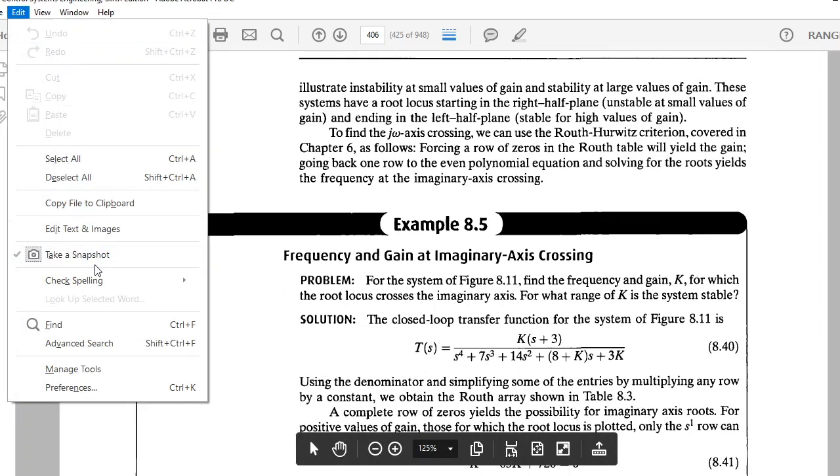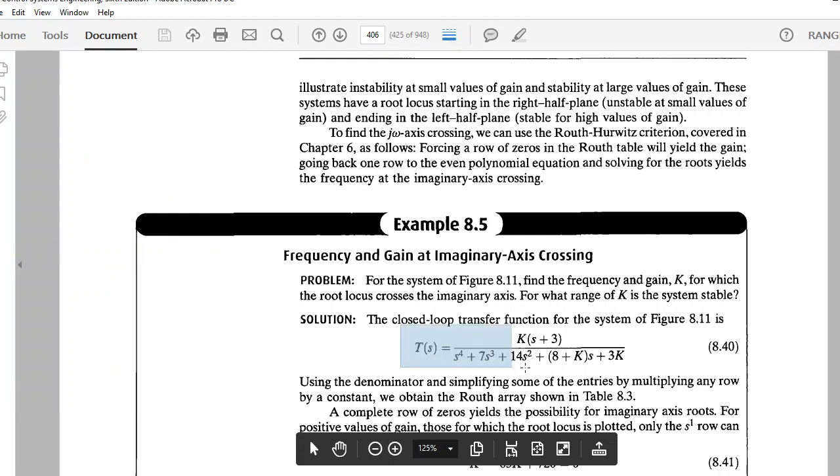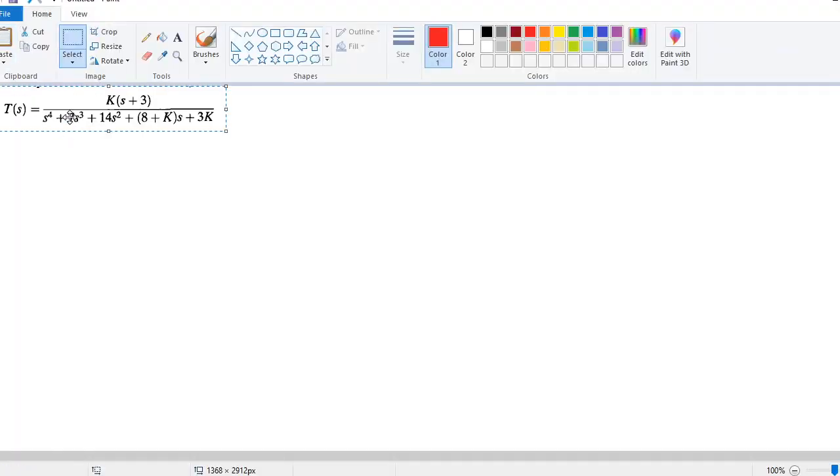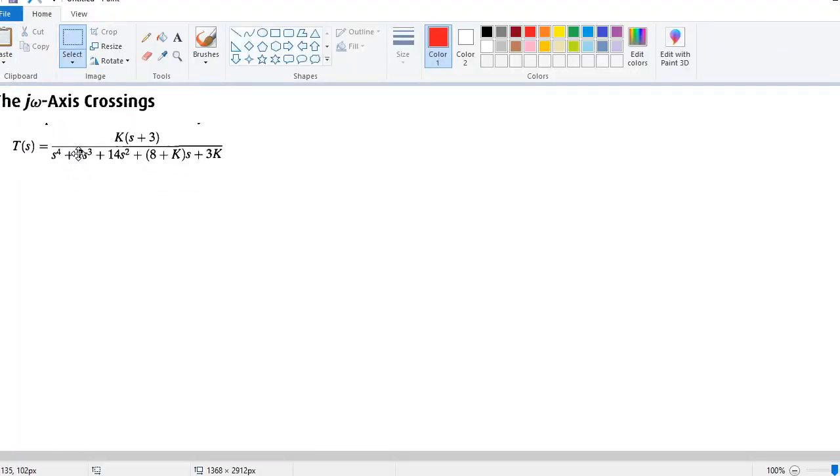For this purpose, we are taking the closed-loop transfer function of a system. It's again taken from the previous problem, but here is the closed-loop transfer function. Based on this closed-loop transfer function, if we have to find the j-omega axis crossing, we use the denominator of the closed loop.